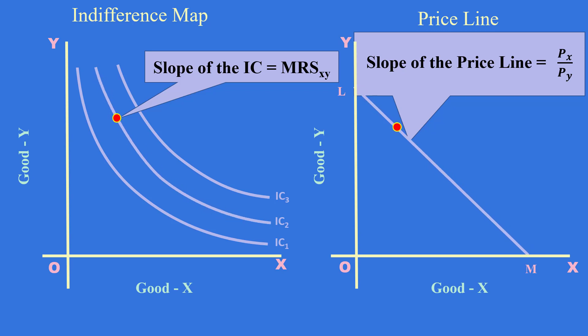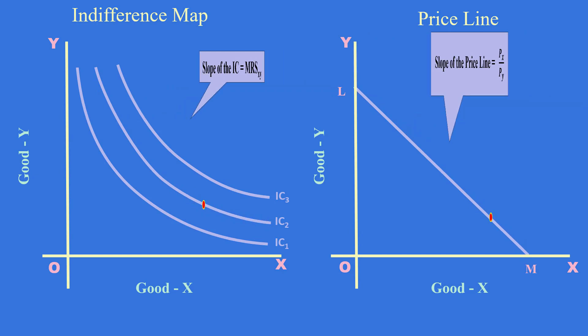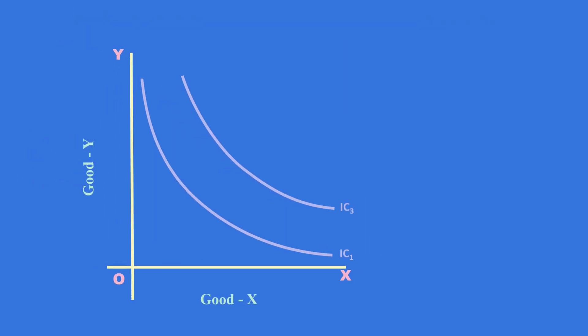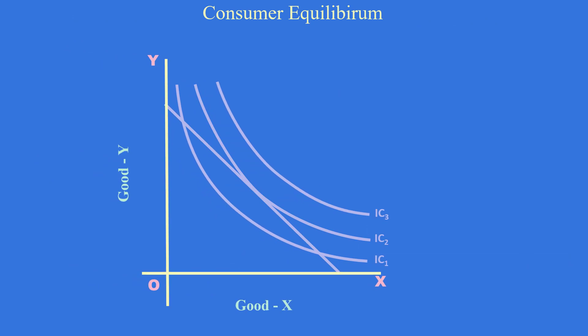There are three indifference curves in the indifference map: IC1, IC2 and IC3. Price line is superimposed on the indifference map.